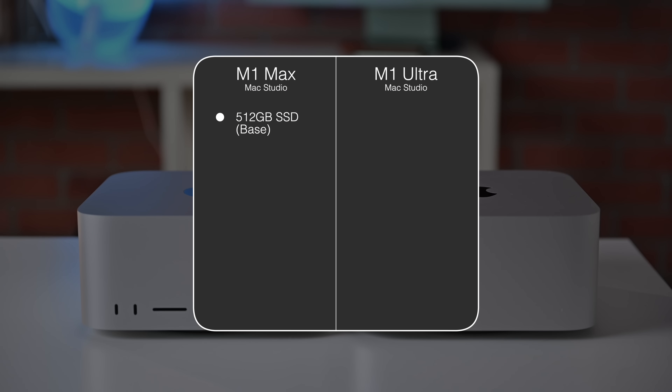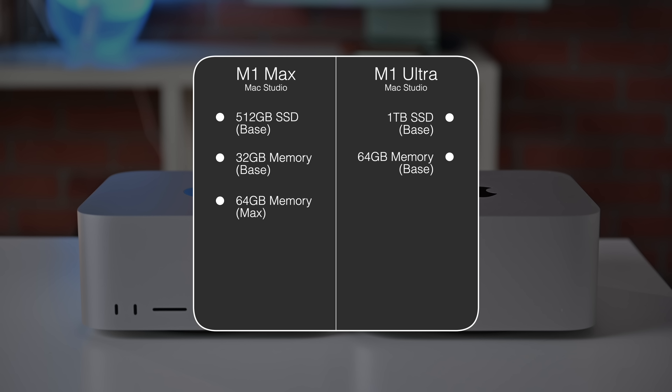So what do you get for that price difference other than the different processor? Quite a few things, though they might be smaller and lower down on your list in terms of importance. These two machines have different base specs. The Mac Studio with the M1 Max starts off with only 512 gigabytes of SSD storage, whereas the M1 Ultra starts off at 1 terabyte. The M1 Max starts with 32 gigs of memory, whereas the M1 Ultra starts off with 64. You can configure the M1 Max version with a maximum of 64 gigs, while the M1 Ultra can go all the way up to 128.